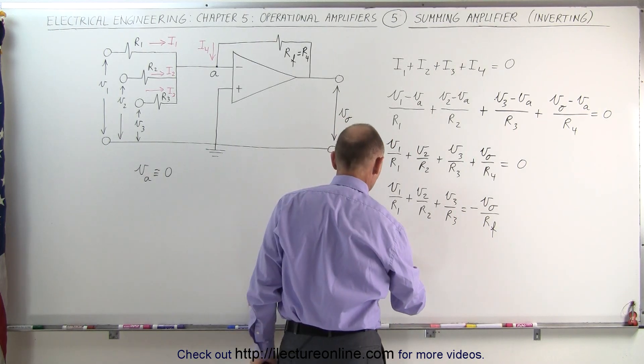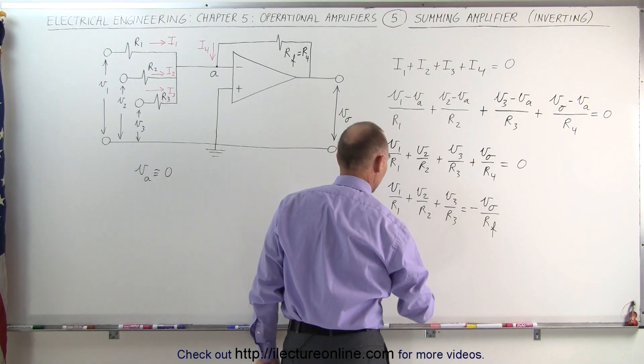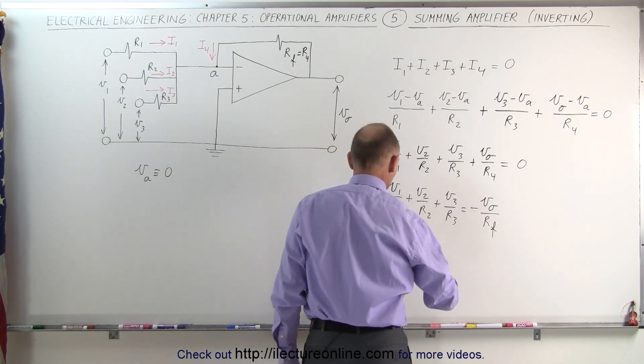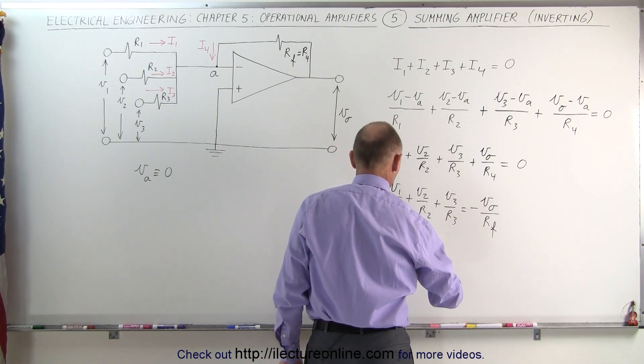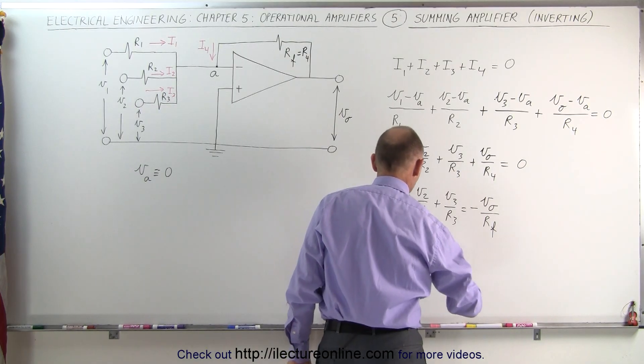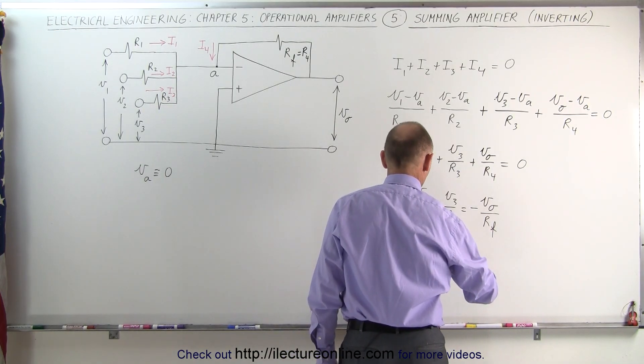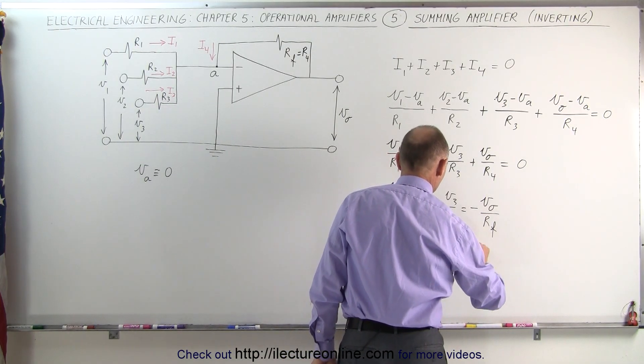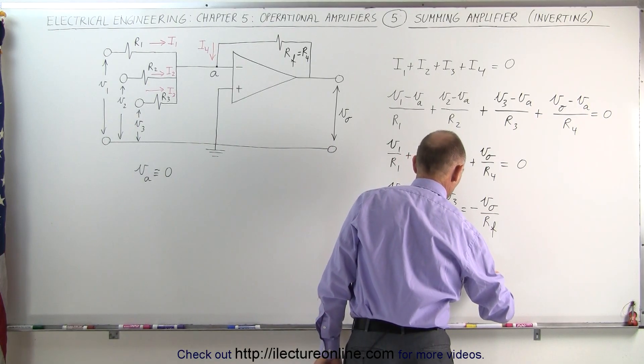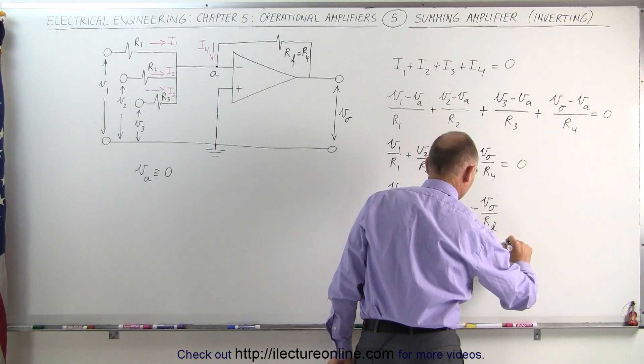We're going to turn the equation around. V sub O is equal to cross multiplying with R sub F, so we can say is equal to R sub F times the negative of V1 over R1 minus V2 over R2 minus V3 over R3.